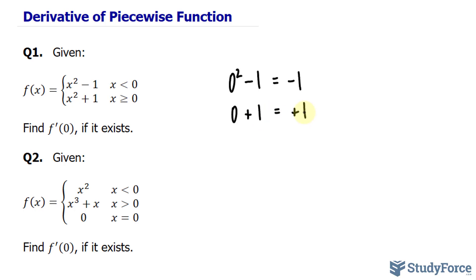Because negative one and positive one do not agree, then this function isn't continuous at zero and therefore its derivative doesn't exist at zero either. So don't waste your time taking the derivative of each of these parts because there's no point.